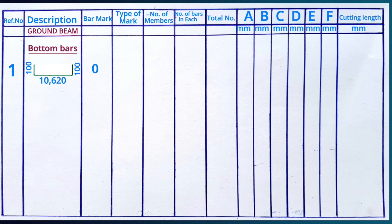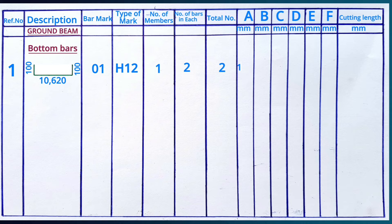We fill in the table with bar mark 01, type of mark or steel bar thickness as H12, number of members as one because we have one beam of this kind, and number of bottom bars as two — giving a total of two bars. Side A is 100mm, side B is 10 meters 620mm, and side C is 100mm, giving a total cutting length of 10 meters 820 millimeters.